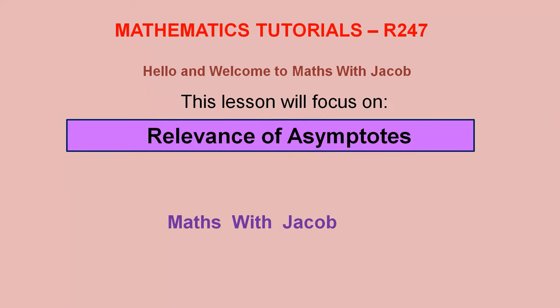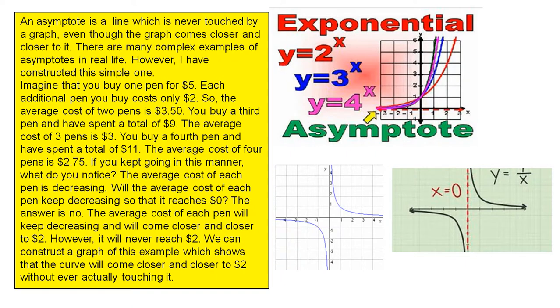Hello and welcome to Maths with Jacob. This lesson will focus on Relevance of Asymptotes. An asymptote is a line which is never touched by a graph, even though the graph comes closer and closer to it.